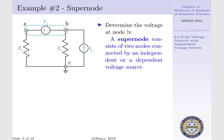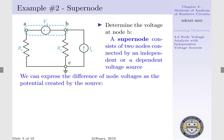A supernode consists of two nodes connected by an independent or dependent voltage source. We can express the difference of our node voltages as the potential created by the source. That is, the difference of potentials between A and B is identically linked to the magnitude of our voltage source.